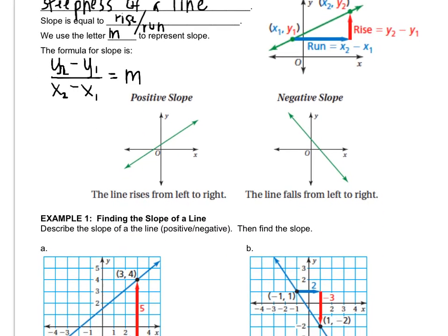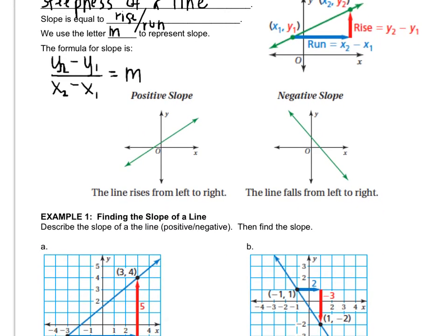If you look at these two pictures, you can see how slope differs versus positive and negative. So if you have a positive line, it's going up from left to right. And if you have a negative line, it's going down.